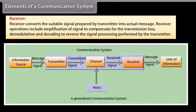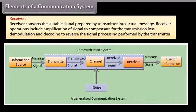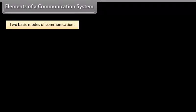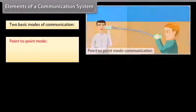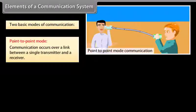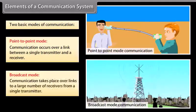Every channel involves loss of energy during transmission. The receiver converts the suitable signal prepared by the transmitter into the actual message. Receiver operations include amplification of signal to compensate for the transmission loss, demodulation, and decoding to reverse the signal processing performed by the transmitter. Two basic modes of communication are: point-to-point mode, where communication occurs over a link between a single transmitter and a receiver, and broadcast mode, where communication takes place over links to a large number of receivers from a single transmitter.